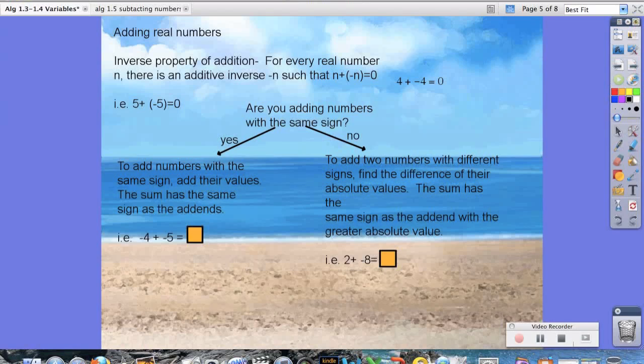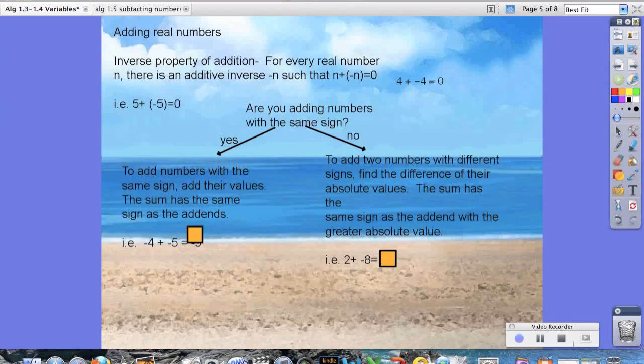So sometimes you'll hear us reference to add the inverse. So I made this table, and this is what we're going to look at now. It says, are you adding real numbers, adding numbers with the same sign? So if we are adding numbers with the same sign, that's a yes, obviously, and we're going to go to the left. Then it says, to add numbers with the same sign, we add their values. The sum has the same sign as their addends. Addends is a fancy word for the two numbers that we're adding up. For example,